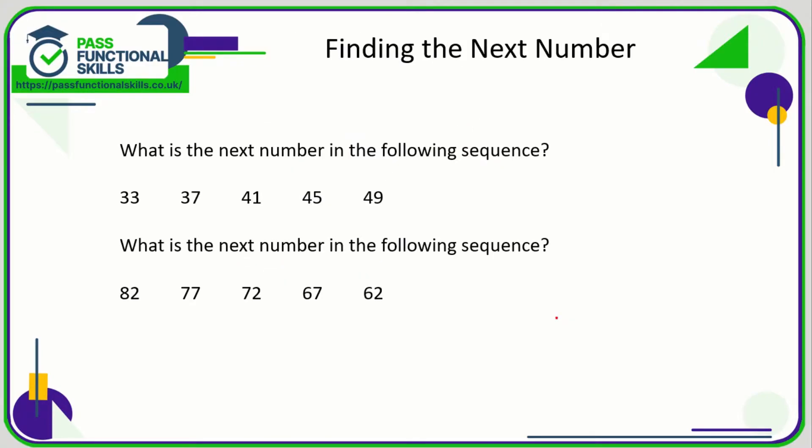You might be asked to find the next number in the sequence, in which case you need to work out what the sequence is first of all. So here, 33, 37, 41, we're going up by 4. Just check we're going up by 4 here, yes we are, so it's plus 4 all the way. So the next number is just going to be 49 plus 4, which is 53.